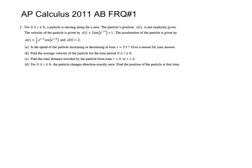We want to figure out the velocity, so let's compute v of 5.5. Because this is calculator-allowed, you just plug 5.5 in for t in the v equation. When you do that, you get about negative 0.45337. I don't really care about the number — I just care that it's negative. A lot of people would think it's negative so it's decreasing, but no, that's velocity. All the negative means is that we're going to the left instead of to the right.